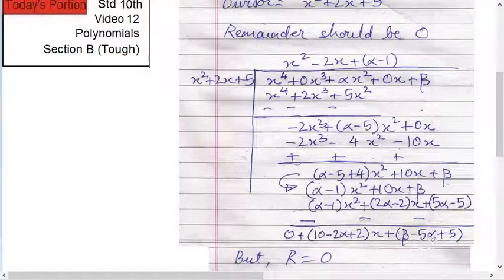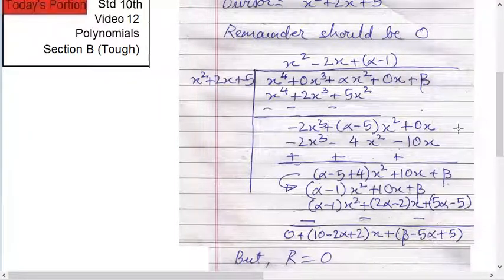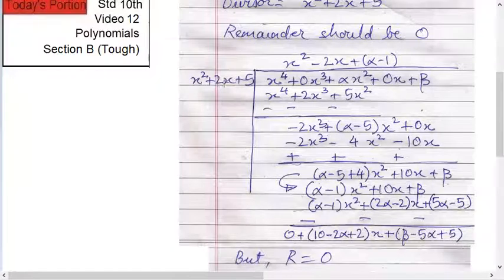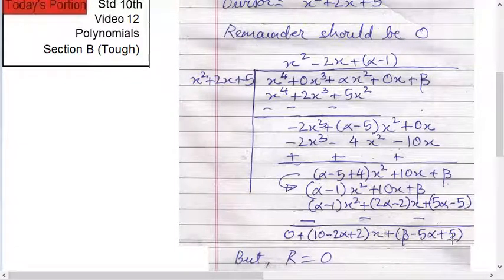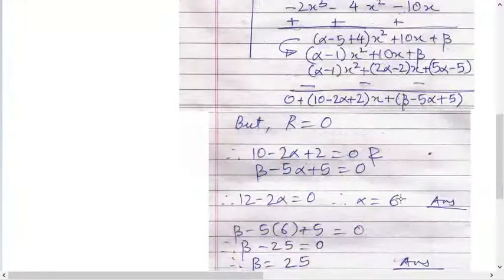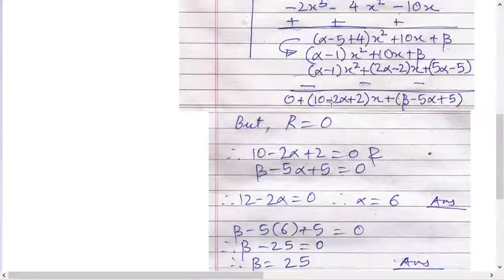Now the division is over. What is given: this x squared plus 2x plus 5 is a factor of x raised to 4 plus alpha x squared plus beta. So it means this remainder should be 0. It means 10 minus 2 alpha plus 2 should be 0, and beta minus 5 alpha plus 5 should be 0.